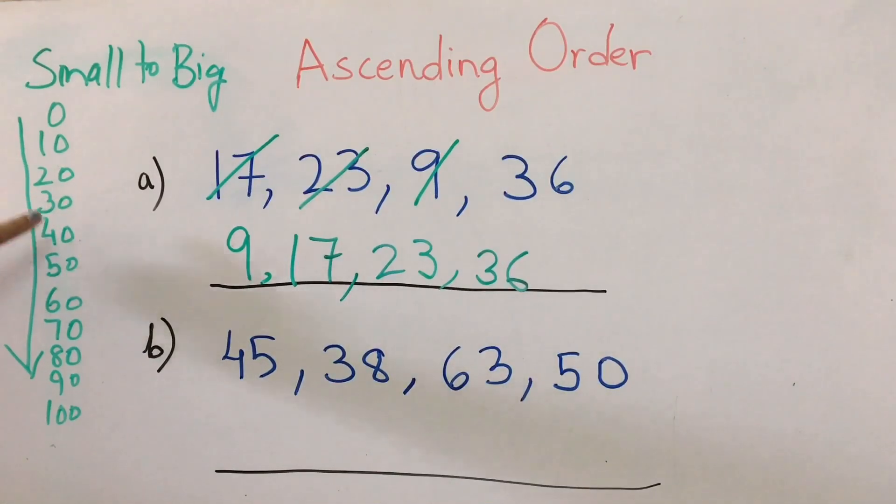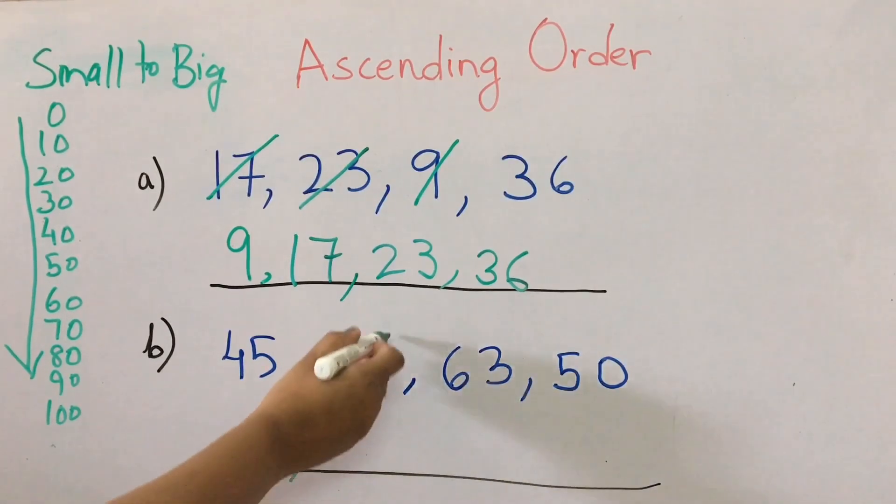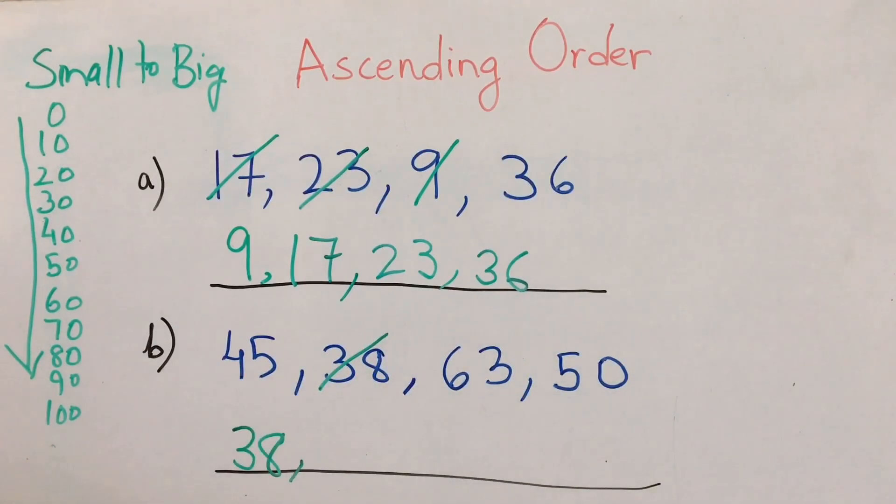Then 30 to 40, we have. So 30 to 40, which number do we have? We have 38. So once after writing, you can just cut it. It will be easier for the child to see the next three numbers, which is the smallest.